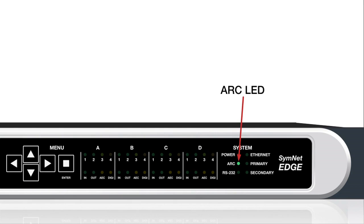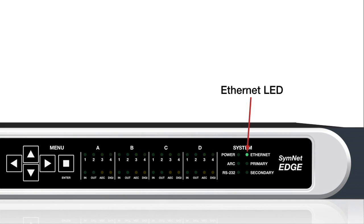The arc LED lights solid to indicate arc network connections and flashes on activity. The RS-232 LED flashes when third-party control activity is present on the RS-232 port. The Ethernet LED illuminates green to indicate network activity, turns amber when acquiring an IP address, and flashes red to indicate default to its local address.